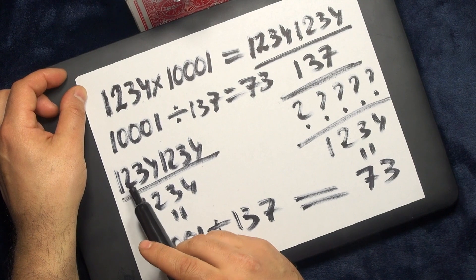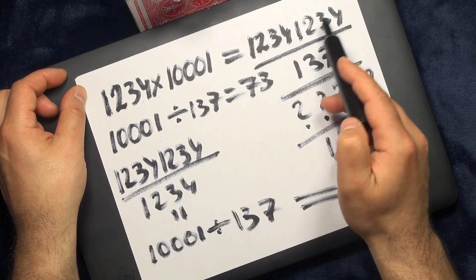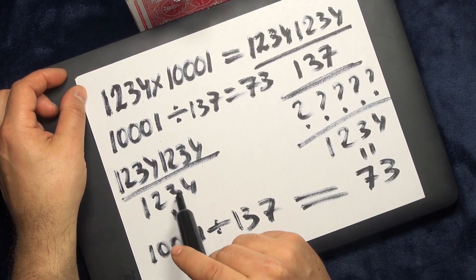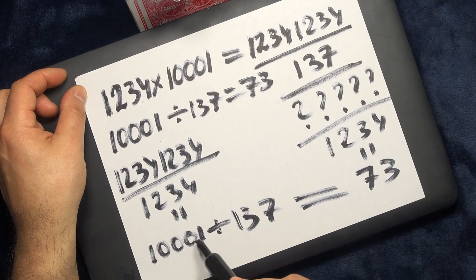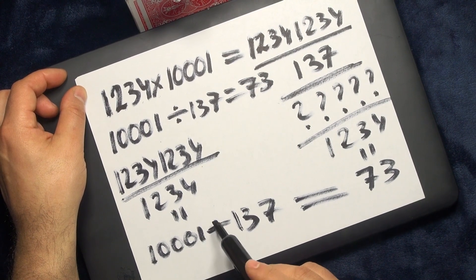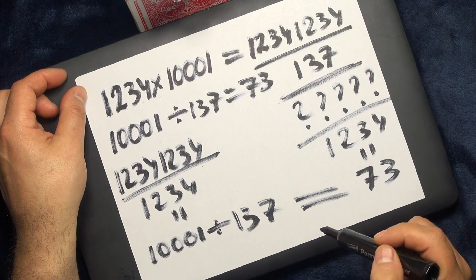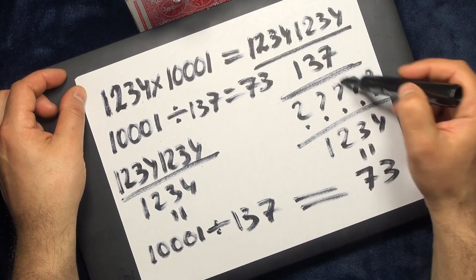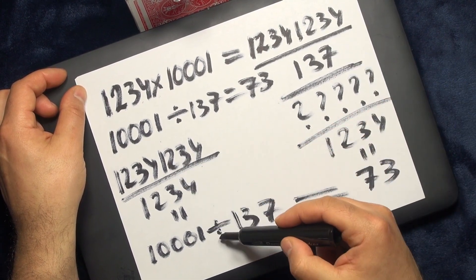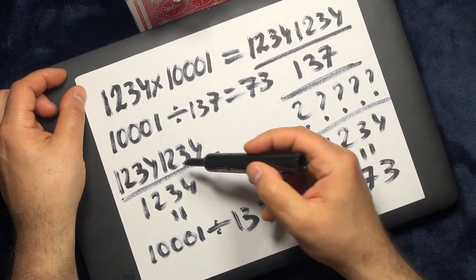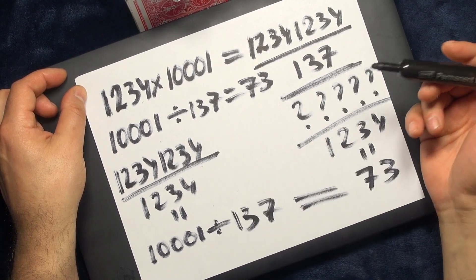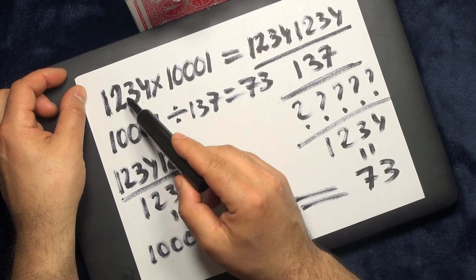This process here is the same as if I asked you to divide your eight-digit number which you entered into the calculator by your original number. It would become 10,001. And then 10,001 divided by 137 becomes 73. So this and this is the same, there is no difference. It doesn't matter what number you would think of, you would become 73 at the end.